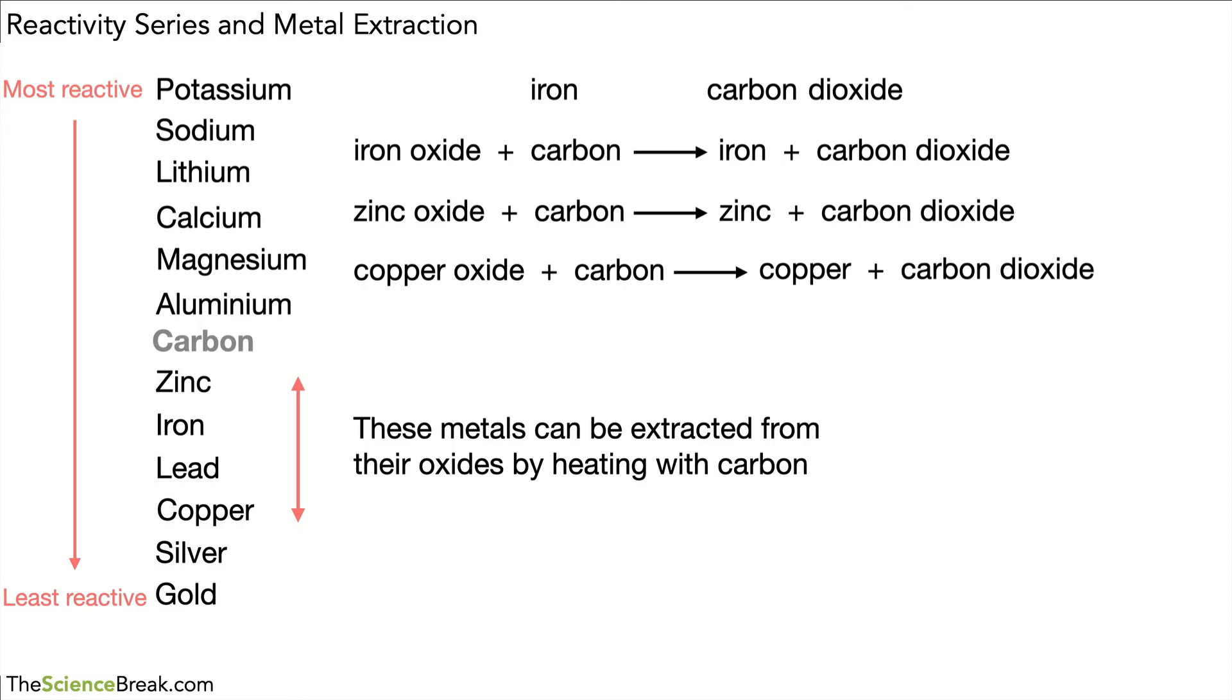What happens if we try to react something like aluminium oxide with carbon? Well aluminium is above carbon in our reactivity series so it's more reactive than the carbon. There's our aluminium above carbon and so the carbon will not be able to remove the oxide, the oxygen, from aluminium oxide. So there is no reaction.